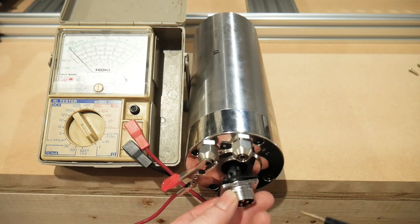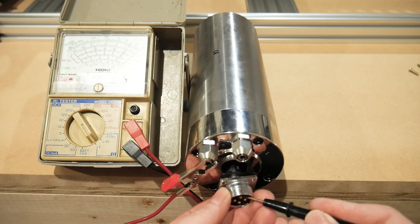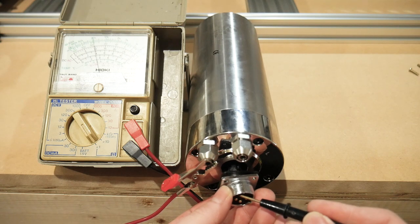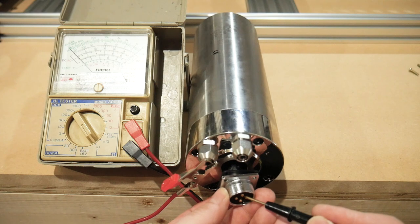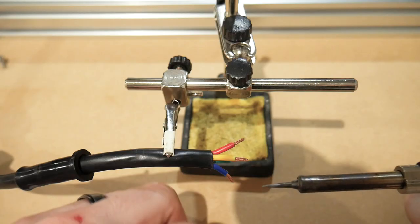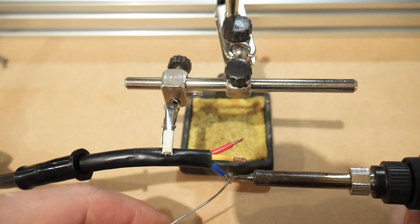Here I'm testing the spindle ground. There are many people that have received the spindle without the ground pin connected. This is a safety risk and should be addressed before using, as you could risk electrocution. As you can see, I have proper ground here, so moving on, let's tin the spindle wires.